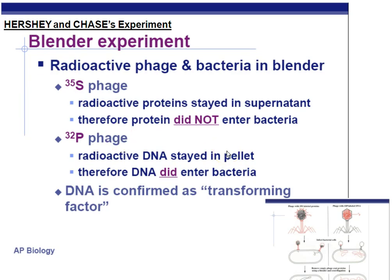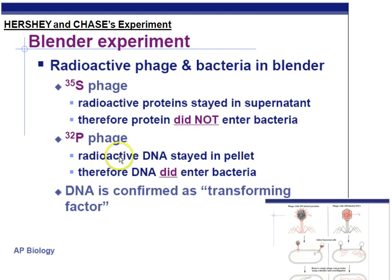The blender experiment summarized: radioactive sulfur, found in the disulfide bridges of protein, did not enter the bacteria. The radioactive phosphorus, found in the sugar phosphate backbone of DNA, did enter the bacteria. So DNA is confirmed as the transforming factor.